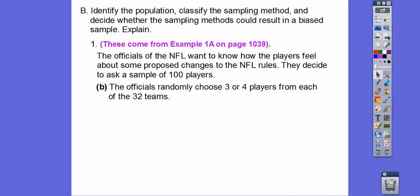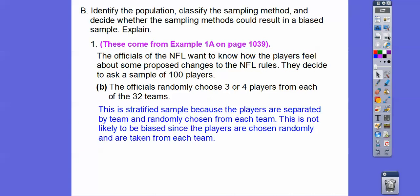So the officials, here's number two. The officials randomly choose three or four players from each of the 32 teams. This would be the stratified sample because the players are selected by a team and randomly chosen from each of those teams. This is not likely to be biased since the players are chosen randomly and are taken from each team.